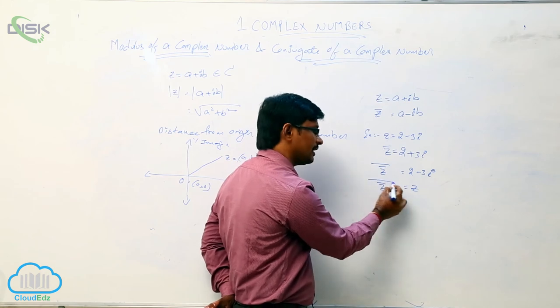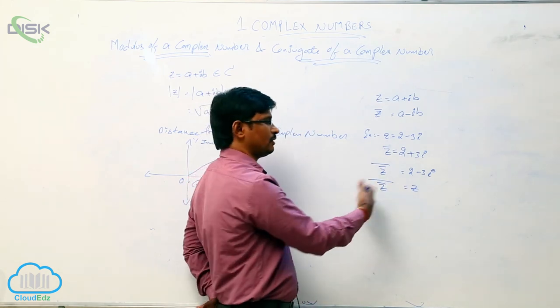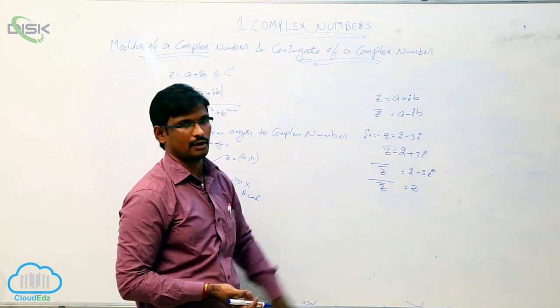Which means the conjugate of the conjugate of a complex number, what we will get is the complex number. We can say that this is one of the properties.